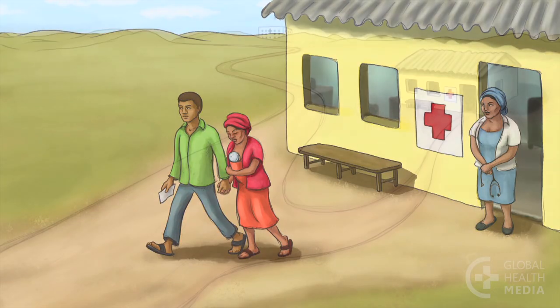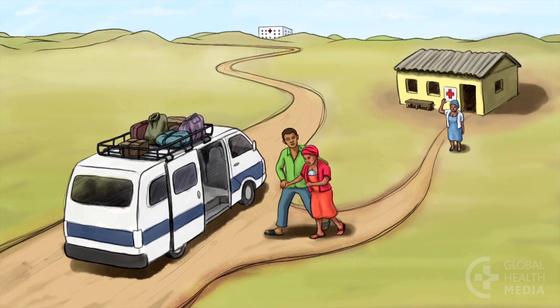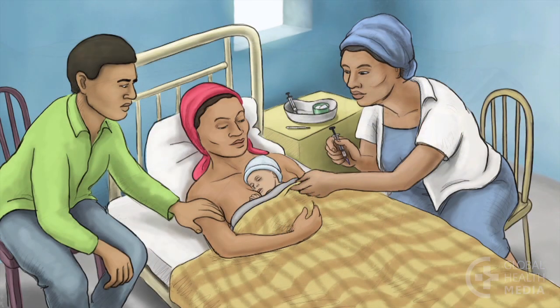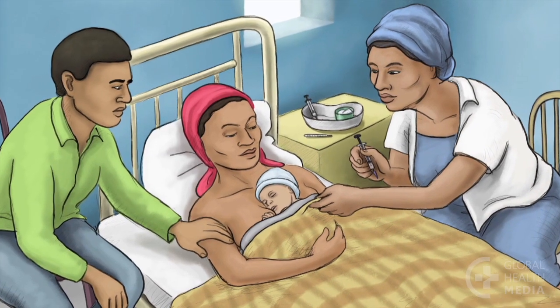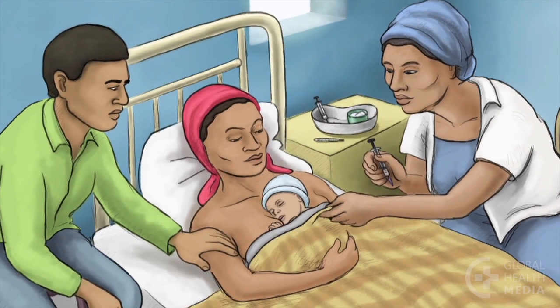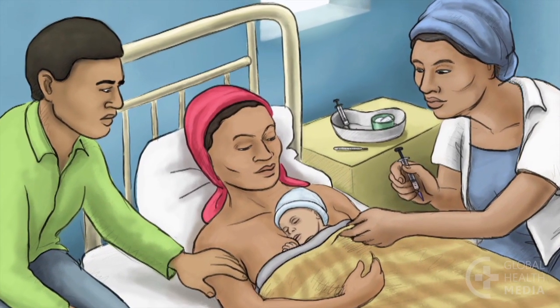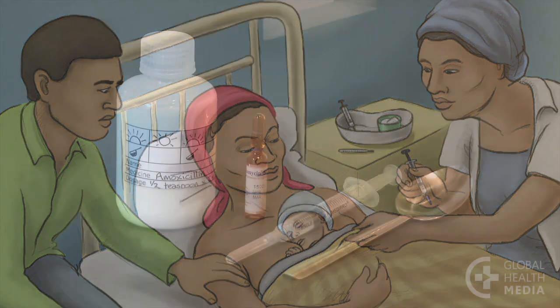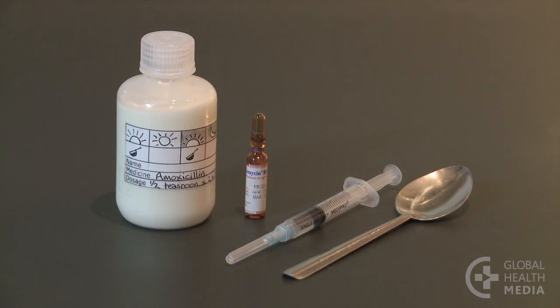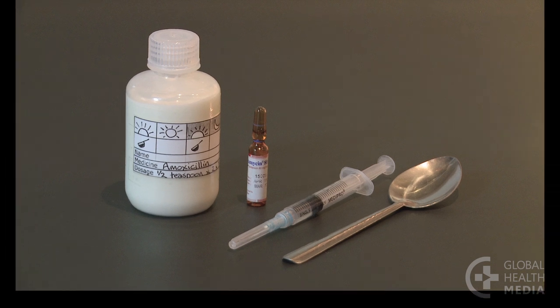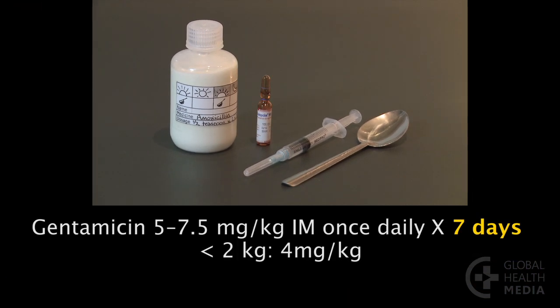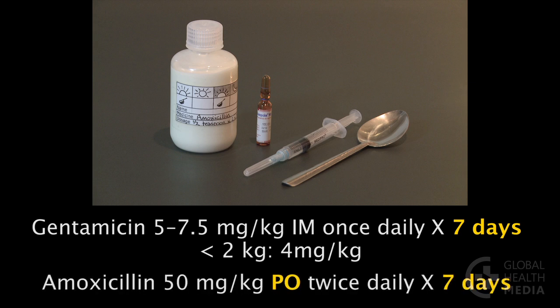Every effort should be made to refer the baby. If referral is not possible, do your best to care for the baby in your clinic, though realize that this care is not the same. Treat the baby according to your national guidelines. The preferred regimen is IM gentamicin once daily for seven days, plus amoxicillin by mouth twice daily for seven days.